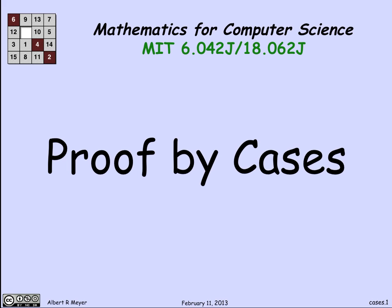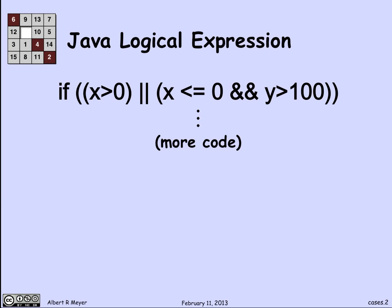Let's look at an explicit, simple example from computer science. Here's a Java logical expression. The way to decipher this is that the double vertical bar means OR in Java, and the double ampersand means AND in Java.